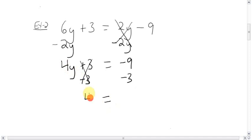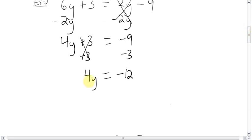We're left with 4y over here. You're down 9. You're down 3. That means you're down 12. 4 is multiplying the y. Get rid of it by dividing. Same on the other side. The 4s are gone. You're left with y equals. Signs are different. So it's going to be negative. 12 divided by 4 is 3. Y equals negative 3.